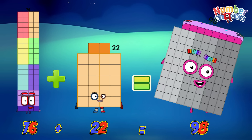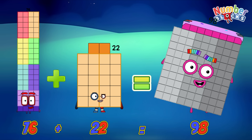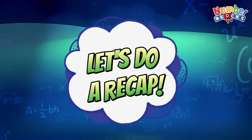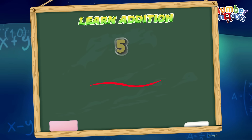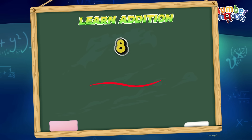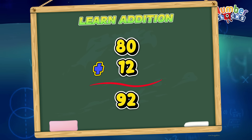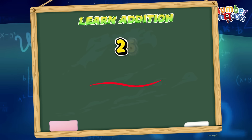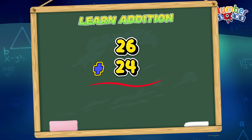76 plus 22 is equals to 98. 80 plus 12 is equals to 92. 26 plus 24 is equals to 50.